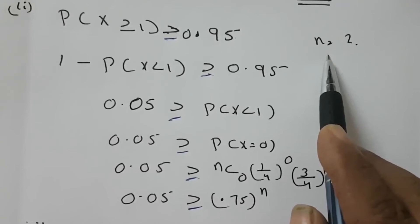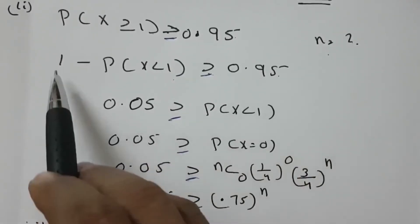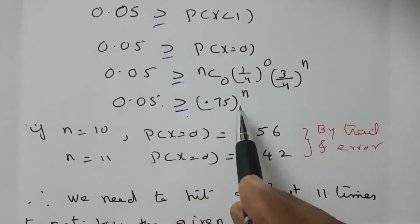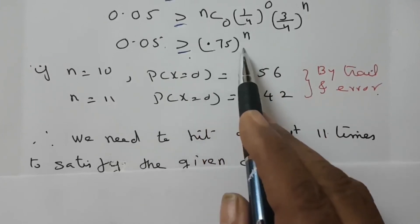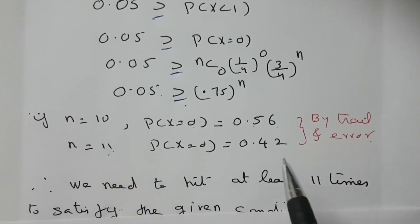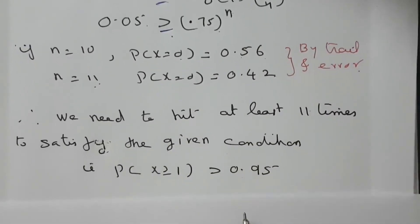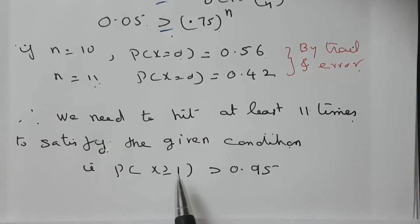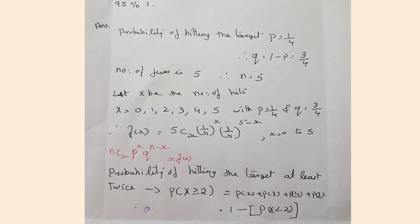P(X ≥ 1) = 1 − P(X < 1) ≥ 0.95. Proceeding this way, we reach: 0.05 ≥ 0.75^n. By trial and error: when n = 0, 0.75^n = 0.56; when n = 11, 0.75^11 = 0.42. So we can conclude that we need to fire at least 11 times to satisfy the condition P(X ≥ 1) ≥ 0.95.